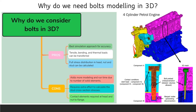This slide explains why you need bolt modeling in 3D instead of one-dimensional or two-dimensional approaches. There are pros and cons for 3D bolted modeling. The main pros are: best simulation approach for greater accuracy — 1D and 2D have a notable accuracy difference compared to 3D. For tensile, bending, and thermal loads, they can be easily transferred through 3D modeling. Also, the full stress distribution in the head, nut, and stud can be easily calculated, whereas in 1D and 2D only approximate results are obtained, which are not accurately reliable for structural studies.